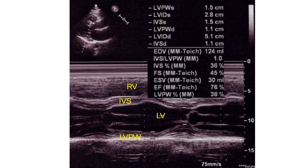IVS % – percentage systolic thickening of the interventricular septum. IVS systolic thickening is reduced in scars of myocardial infarction as well as in hypertrophic cardiomyopathy. FS – fractional shortening. ESV – end systolic volume. EF – ejection fraction – the most important and popular measure of left ventricular systolic function.